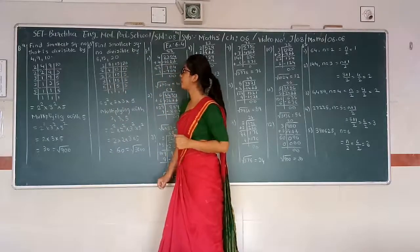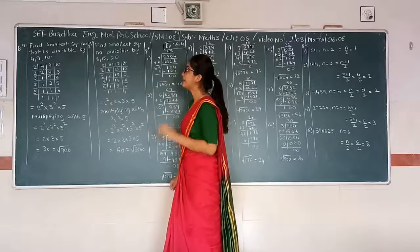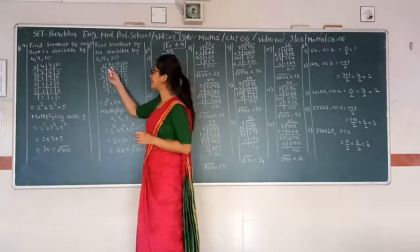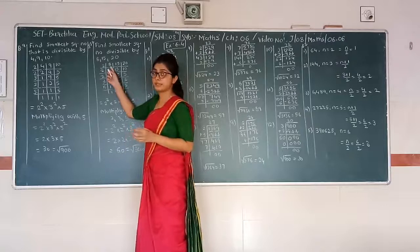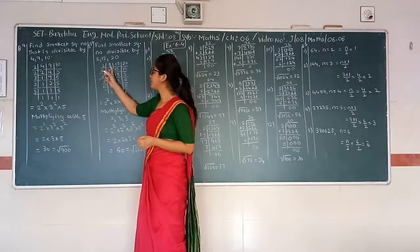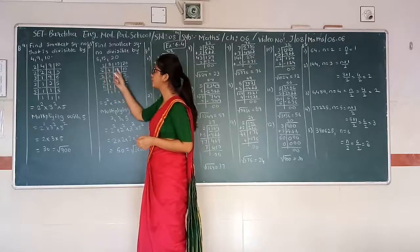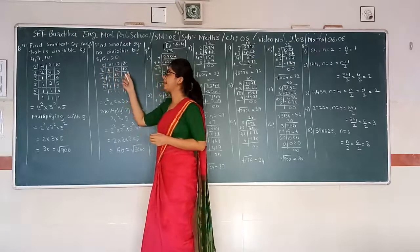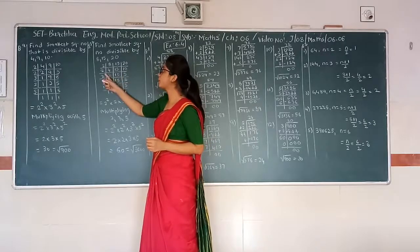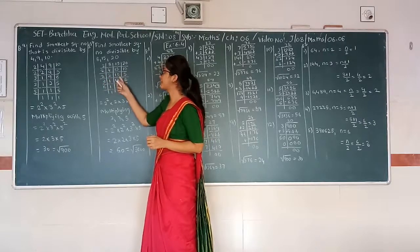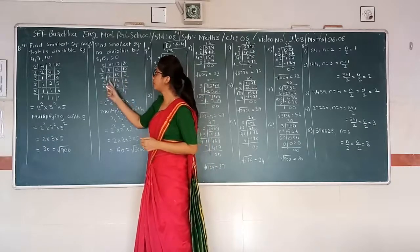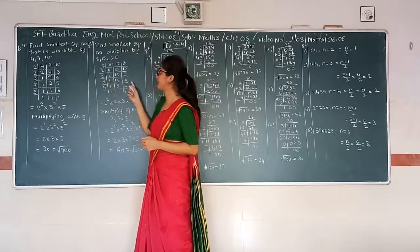Find the smallest square number divisible by 8, 15 and 20. 8 and 20 are divisible by 2. Therefore, 8 divided by 2 gives 4, 15 remains as it is and 20 divided by 2 gives 10. Again divided by 2: 4 gives 2, 15 remains as it is and 10 gives 5.